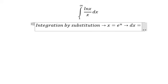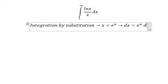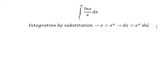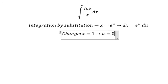dx equals e to the power of u du, so we need to change the boundary. If x equals 1, then u should be 0. If x equals positive infinity, then u should be positive infinity.